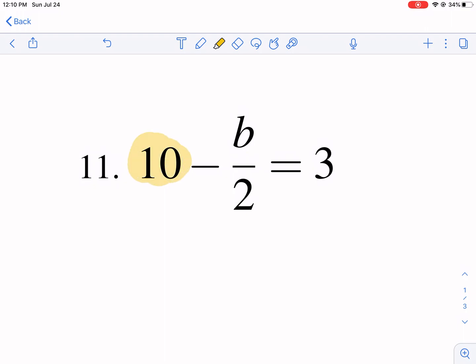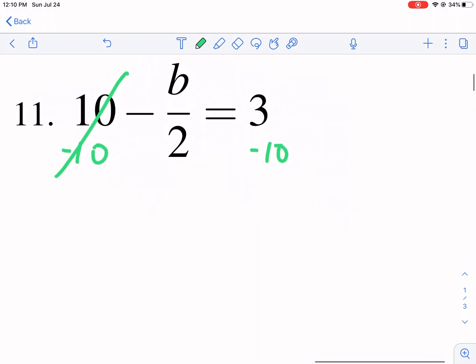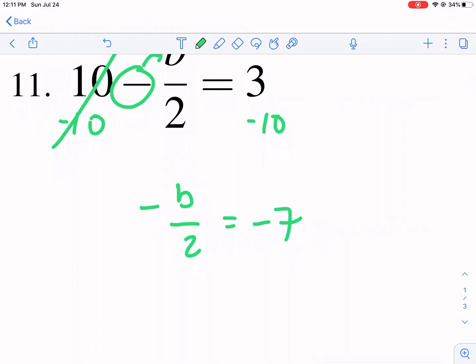So we have a positive 10 here. We're going to subtract 10 from both sides. First, that's our first step. That cancels. That's the reason why we decided to subtract 10. And now we have, keep that minus there, minus b over 2. I like to always move that minus to the numerator. I think it makes it easier. Equals negative 7. 3 minus 10, negative 7. So now I have a one-step equation.